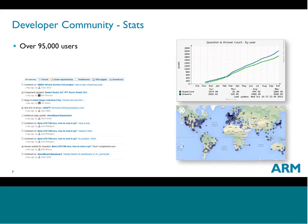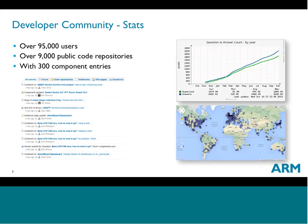We have a fairly vibrant developer community — over 95,000 users, and that number continues to grow. Almost 10,000 public code repositories where people contribute examples and libraries for others to build on. There are over 300 component entries. A component is a key building block for internet-connected things — once you have a microcontroller and connectivity, you need to sense the world around you and move that data somewhere meaningful.